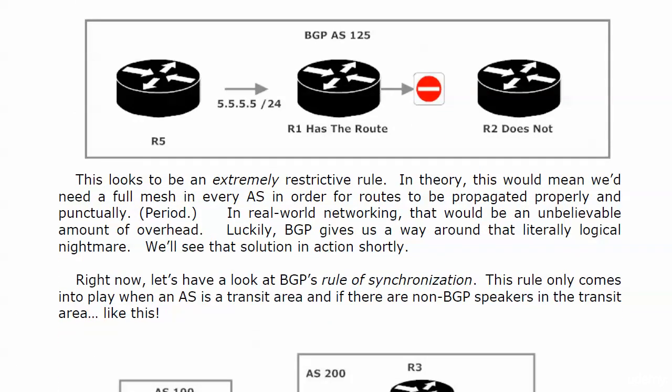Now this looks like a pretty restrictive rule, because in theory this would mean that we would need a full mesh in every AS in order for our routes to be propagated properly. Now in real-world networking, that would be an unbelievable amount of overhead. And actually in larger labs — you know, 8, 9, 10 routers — and you start trying to build a full mesh, it's just a nightmare.